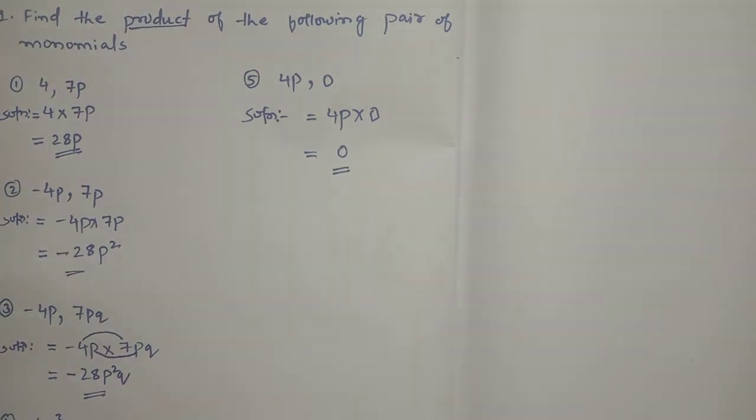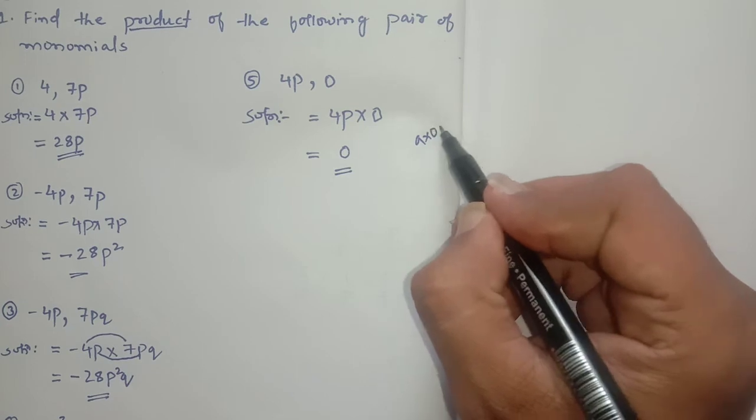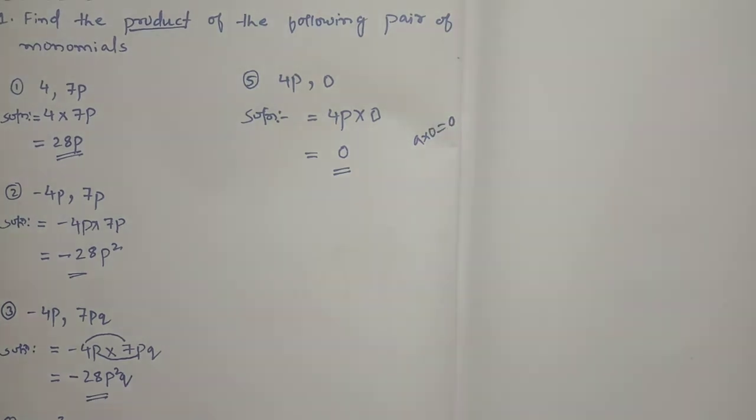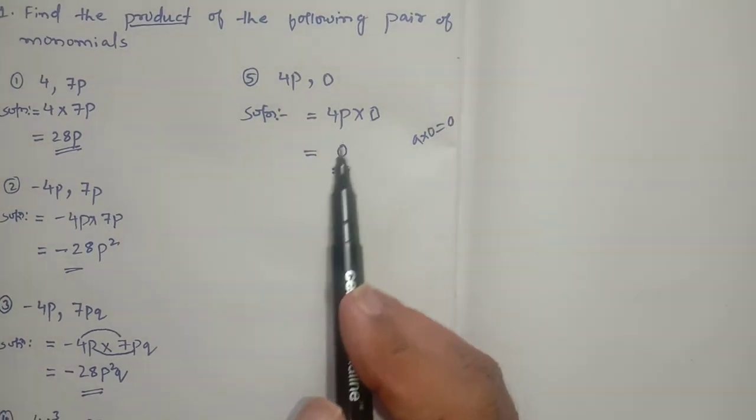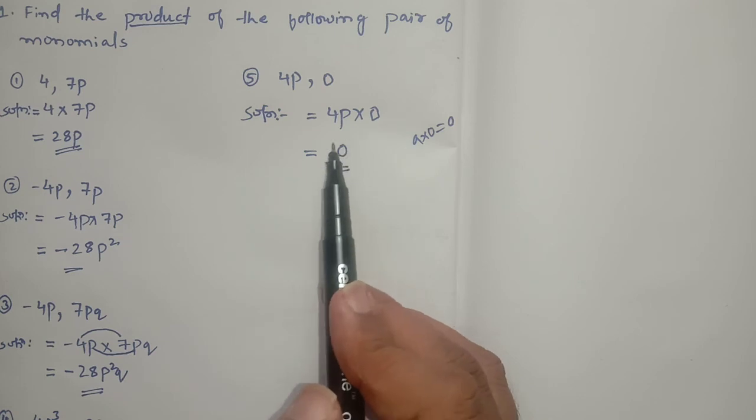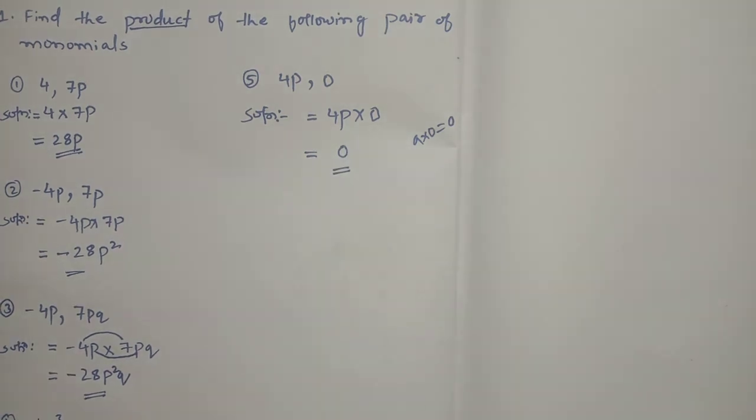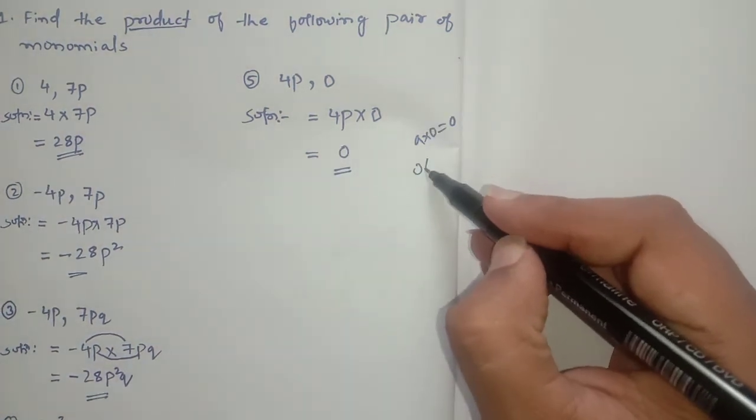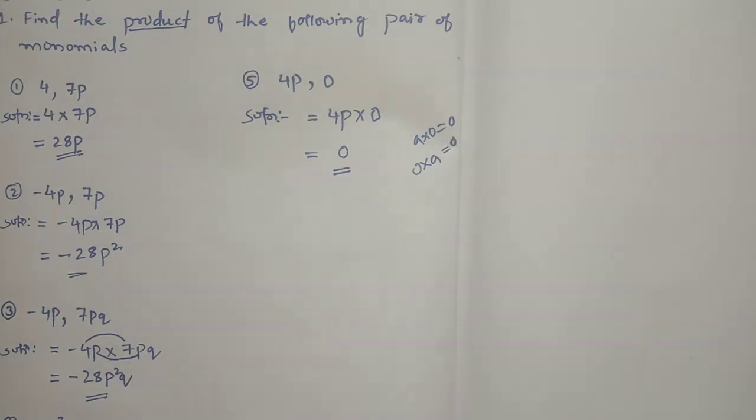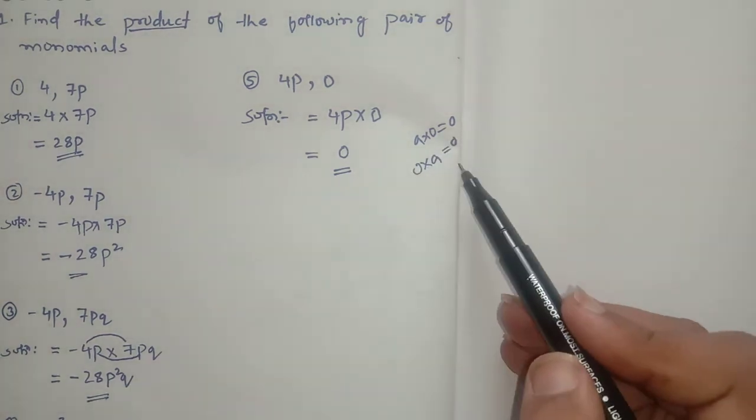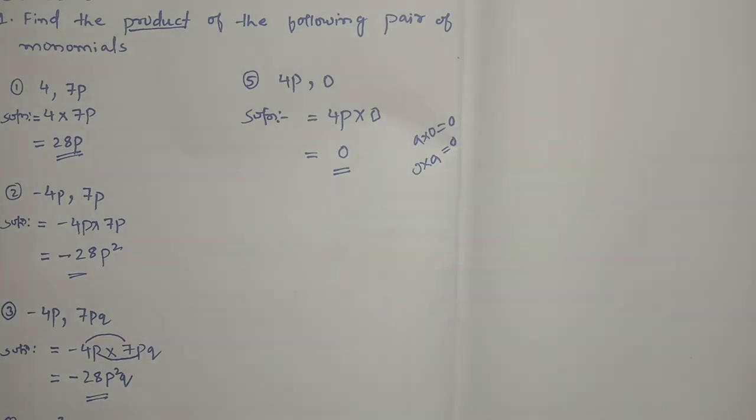Keep in mind, anything into zero is zero. When you multiply anything with 0, that whole value will become 0. If you multiply 0 with anything, then also it is 0. When you multiply 0 with anything, answer will be 0.